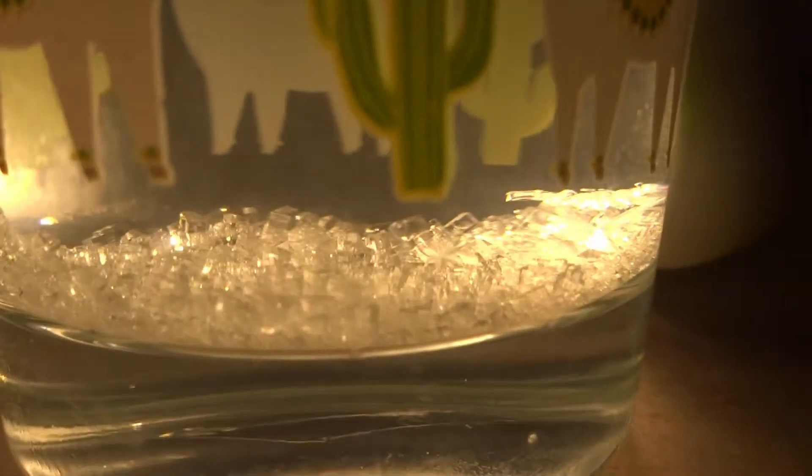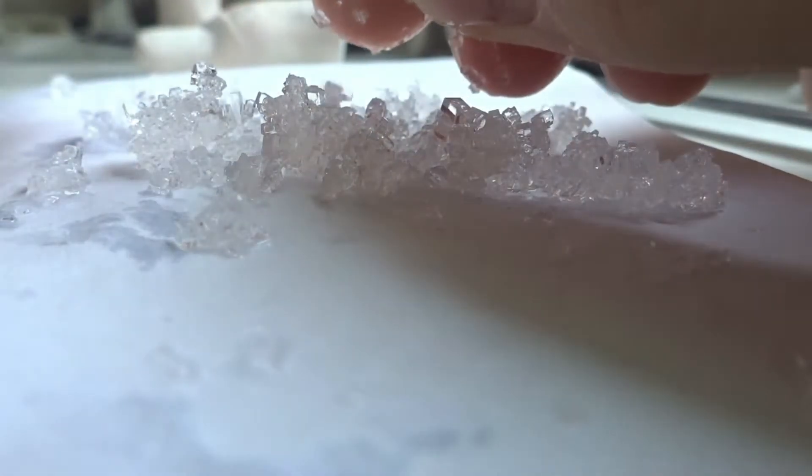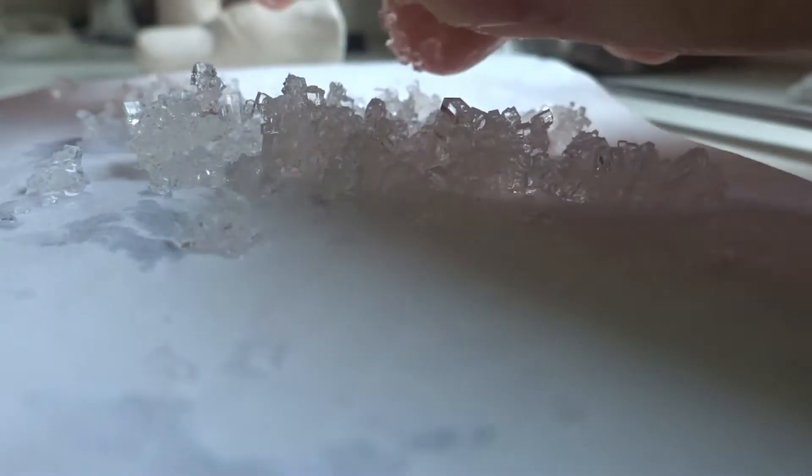In this glass of water are probably 200 different crystals of table salt, and in this video I'm going to pick out the best looking ones to grow them into a massive size.